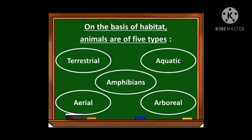On the basis of habitat, animals are of five types. They are terrestrial, aquatic, amphibians, aerial, and arboreal.